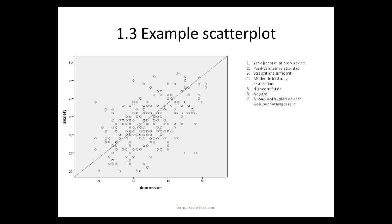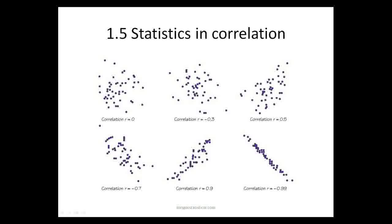So going back to our scatterplot, yes, there's a linear relationship. It is positive. It is that the straight line was sufficient to sum up the data. It was moderate to strong relationship because we've got quite a steady gradient. There is a high correlation. There does not appear to be gaps. There's a couple of outliers on each side but nothing really drastic. We're looking for really drastic outliers to say anything about and even then at this stage we don't really do anything.